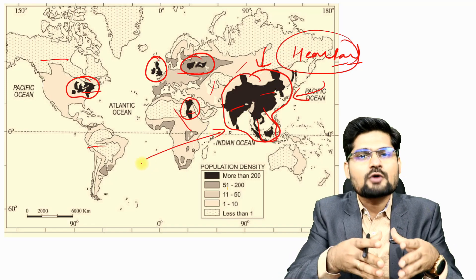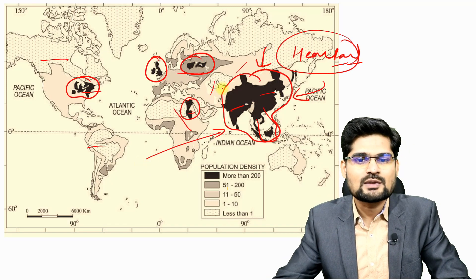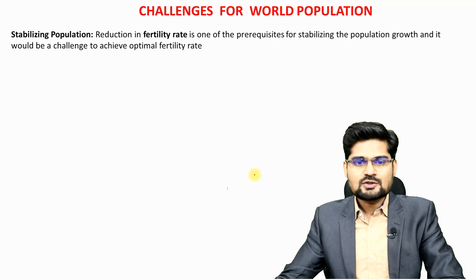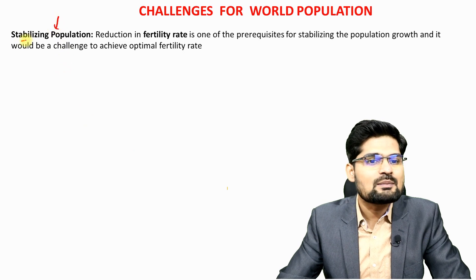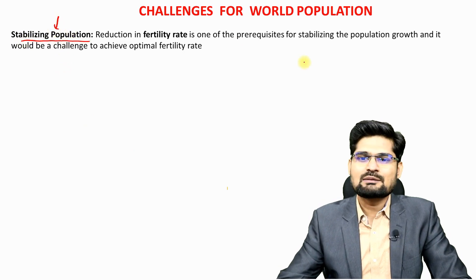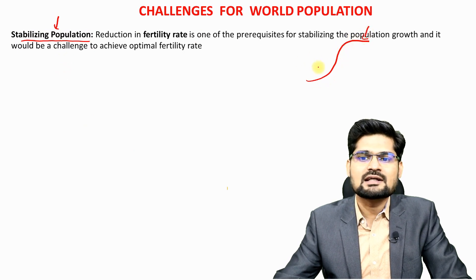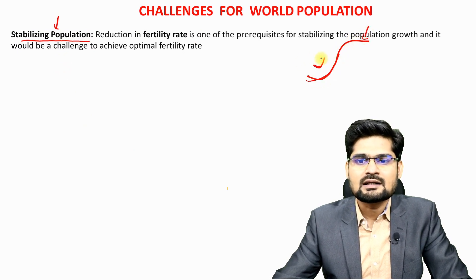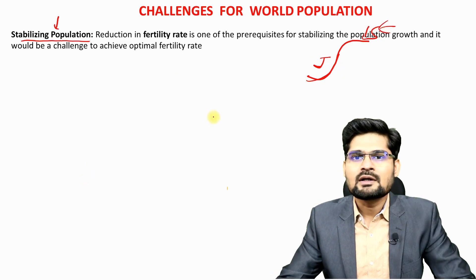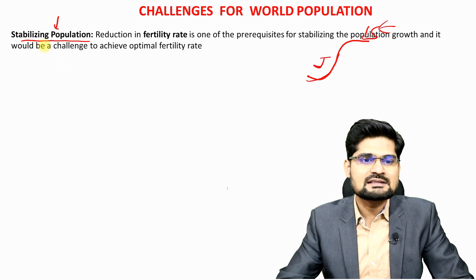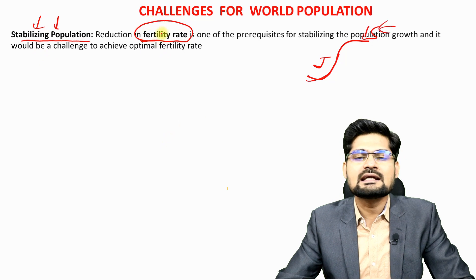The world population problems will obviously be concentrated where population is densest. The first major challenge is stabilizing population growth — represented by the S-shaped curve we studied, as opposed to the J-shaped exponential curve. Stabilization requires a reduction in fertility rates, which is one of the most pressing challenges in the world today.